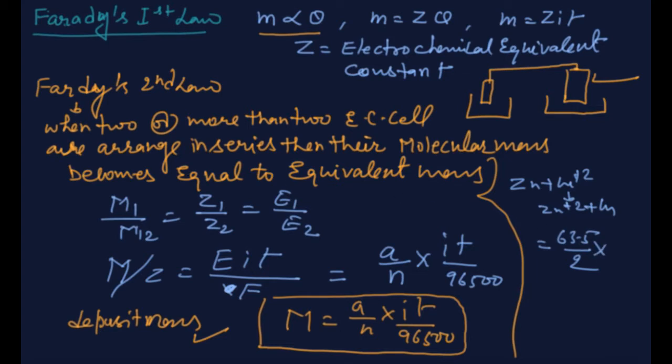I, it will be given. I hope so that it was given 1.5 or whatsoever it is, it doesn't matter. Time is given in minutes. You have to convert them in seconds by multiplying with 60. And Faraday charge.